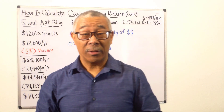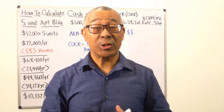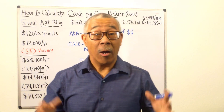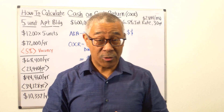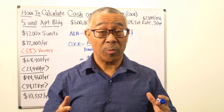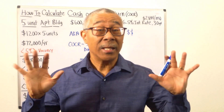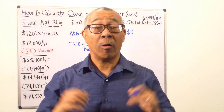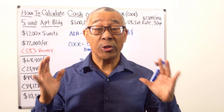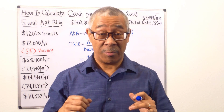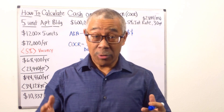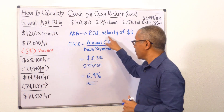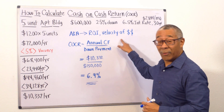How to calculate cash on cash return. Cash on cash return on a commercial property or anything else is also known as your ROI, or return on investment — also known as the velocity of your money.